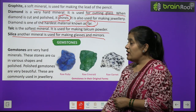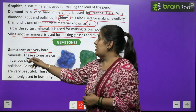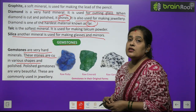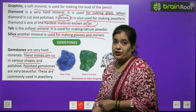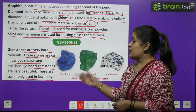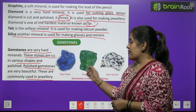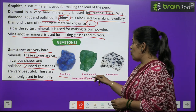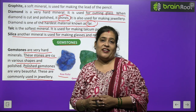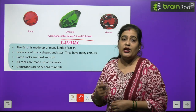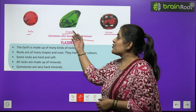Now we will learn about gemstones. Gemstones are very hard minerals. These stones are cut in various shapes and polished. Polished gemstones are very beautiful and are commonly used in jewelry. Here are pictures of raw ruby, raw emerald, and raw granite — after cutting and polishing, they look very beautiful.